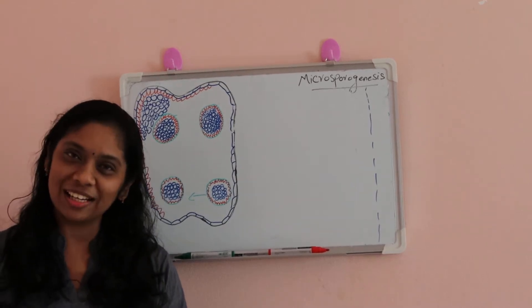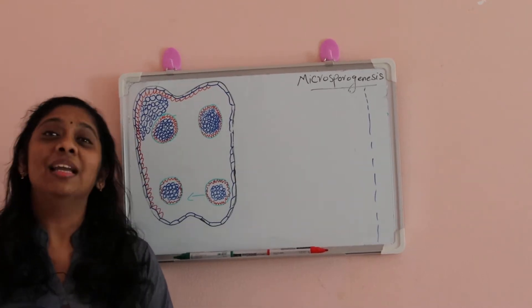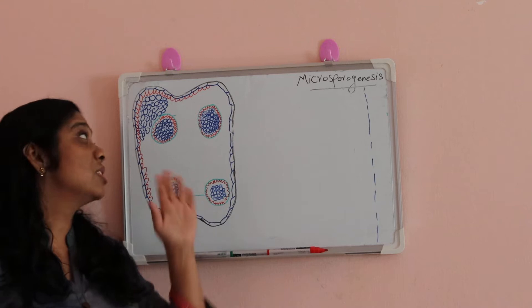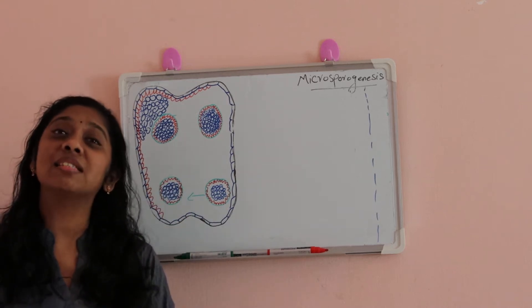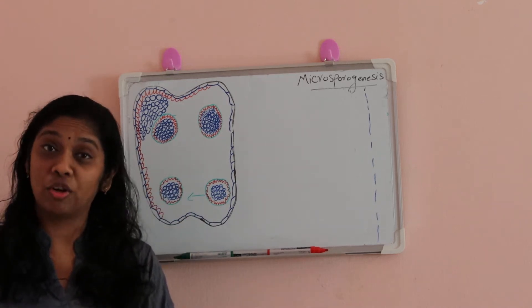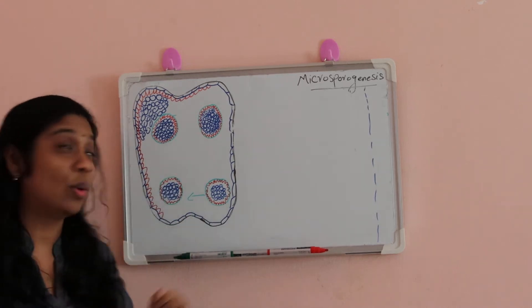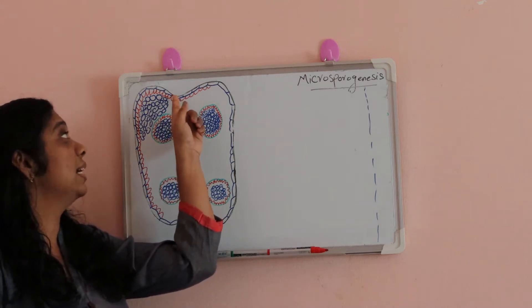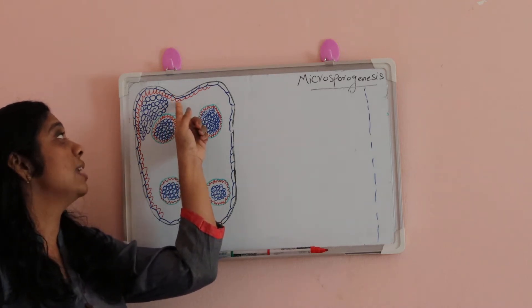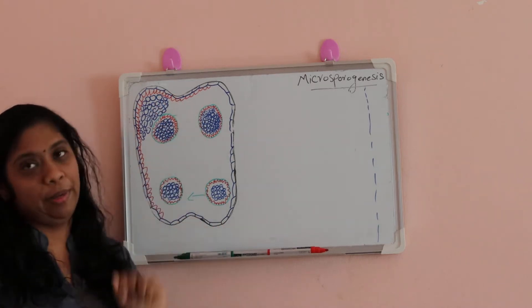Hello everyone, welcome to the class. We will continue the topic. Last topic was the structure of the anther wall. We discussed about the structure of the anther wall, its layers: that is epidermis, the single layer, endothecium, middle layers, and the tapetum.